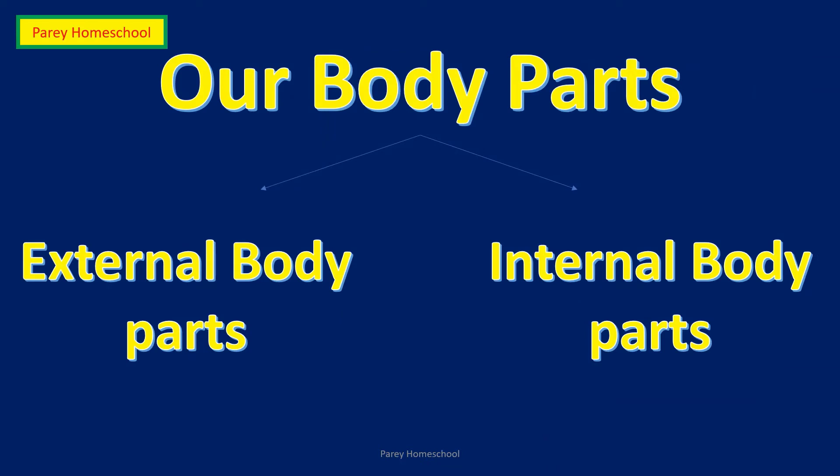The body parts which we can see with our eyes are called external body parts. Internal body parts are the body parts which we cannot see with our eyes — they are inside our body. So, there are two types of body parts: external and internal.